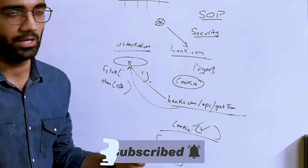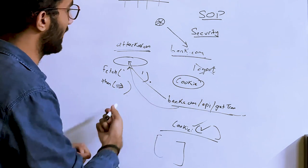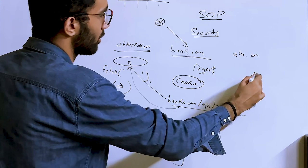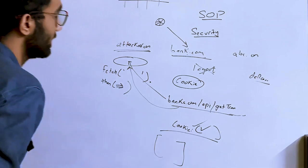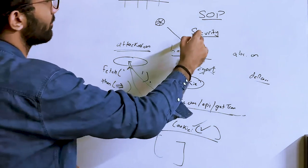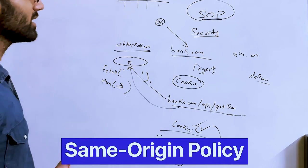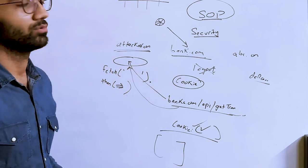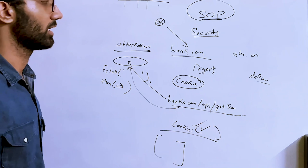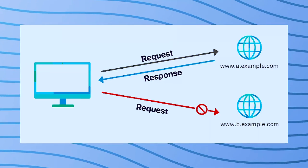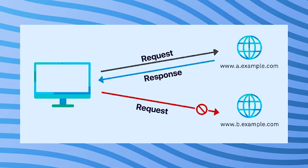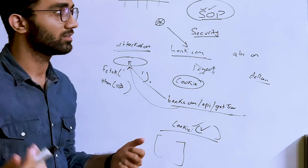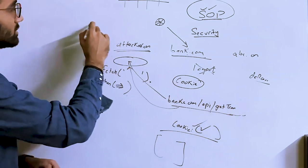So browsers implemented a policy known as the Same-Origin Policy, which restricts access to certain browser functionalities — including XHR and fetch requests — to only origins that have the same origin. Same origin means matching protocol, domain, port, and top-level domain.